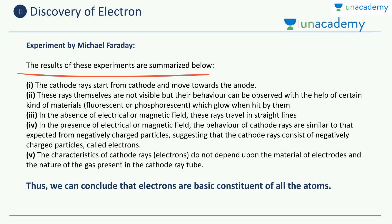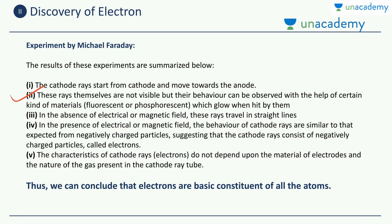So what are the observations made by Faraday? First, the cathode rays start from the cathode and move towards the anode. Second, these rays themselves are not visible, but their behavior can be observed with the help of certain fluorescent or phosphorescent materials which glow when hit by them. Third, in the absence of electrical or magnetic field, these rays travel in straight lines.